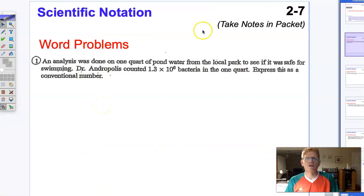In this problem, an analysis was done on one quart of pond water from the local park to see if it was safe for swimming. Dr. Andropoulos counted 1.3 × 10⁶ bacteria in one quart. Express this as a conventional number. So we're going to take this number in scientific notation and convert it to standard notation.